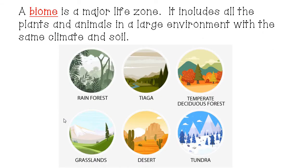In your notes, let's go ahead and get a working definition of the word biome. Your first blank is biome, b-i-o-m-e. If you look at that, you'll see that root 'bio,' which means life. A biome is simply a major life zone — it includes all of the plants and animals in a very large environment with the same climate and soil.